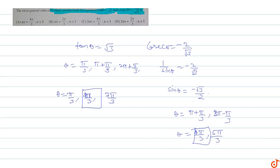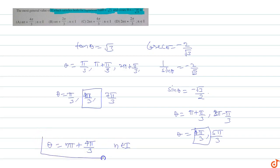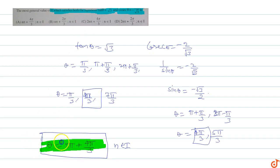So the general solution satisfying both equations is theta equals n pi plus 4pi by 3, where n belongs to integer values. The most general value of theta which satisfies both equations is theta equals n pi plus 4pi by 3. So option A would be the correct option.